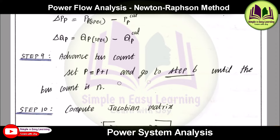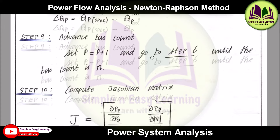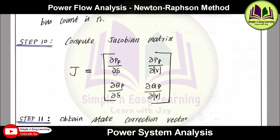Advance bus count by setting p = p+1 and go to step 6 until the bus count reaches n. This process repeats until all buses are counted. Then compute the Jacobian matrix using the expressions for dP/d_delta, dP/d|V|, dQ/d_delta, and dQ/d|V| — each submatrix has a separate equation — and substitute to form the full Jacobian.